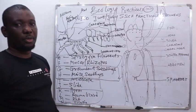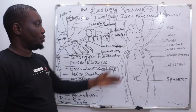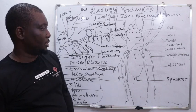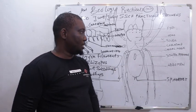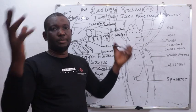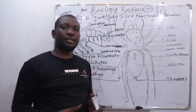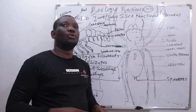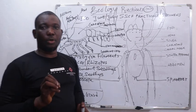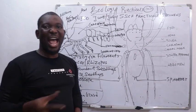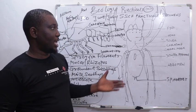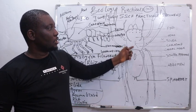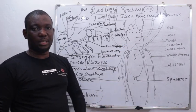Now let's look at the economic importance of the two organisms. For spider, which is specimen C, it webs — it forms nets. These webs and nets help to trap most domestic insects like ants and houseflies. Specimen C, the spider, is an insectivorous organism, meaning it feeds on insects.